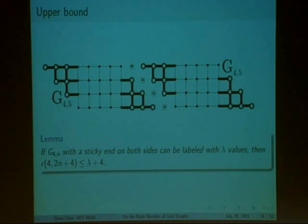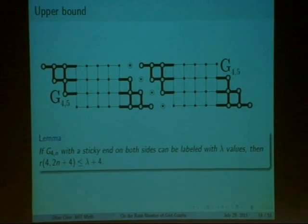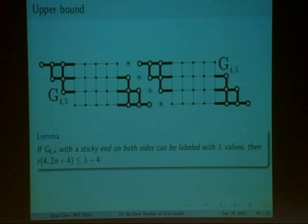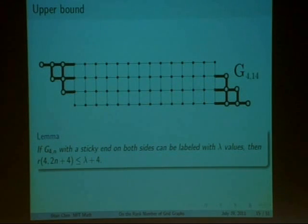To find our upper bound, we define a sticky end to be this bolded configuration resembling somewhat of a staircase. It turns out that if we combine two copies of a 4 by n grid, each with two sticky ends, and then we merge them in the middle with two high vertices, obviously the path condition will still be satisfied. Furthermore, this actually yields a 4 by 2n plus 4 grid graph with two sticky ends.